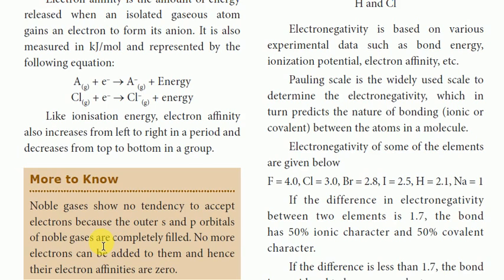No more electrons can be added to noble gases, and hence the electron affinity of noble gases is zero. Because the s and p orbitals are completely filled, the electron affinity is zero.